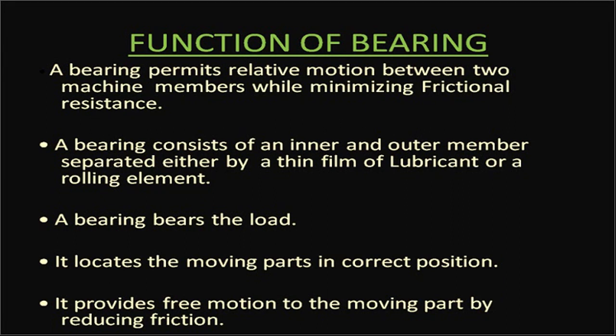A bearing permits relative motion between two machine members while minimizing frictional resistance. The machine members include a stationary member, which is the housing where the bearing fits, and a rotating member, which is the shaft. Both can move relative to each other with minimum friction. A bearing consists of an inner and outer member separated either by a thin film of lubricant or a rolling element.